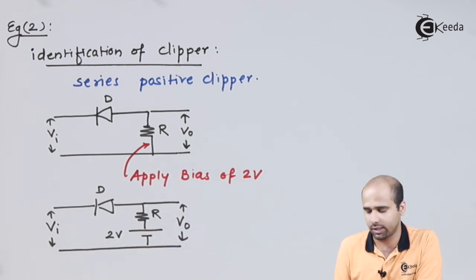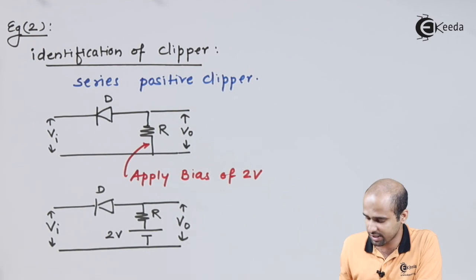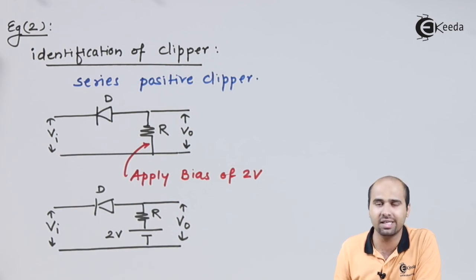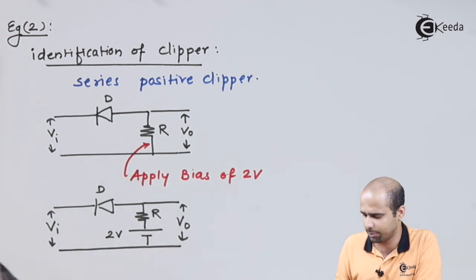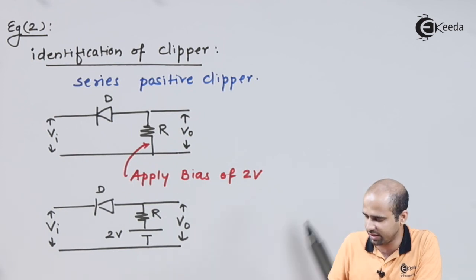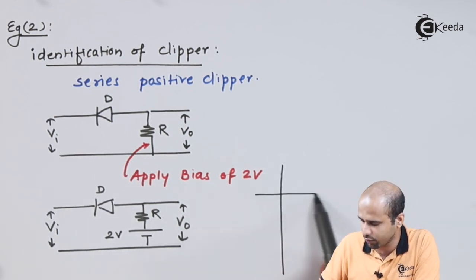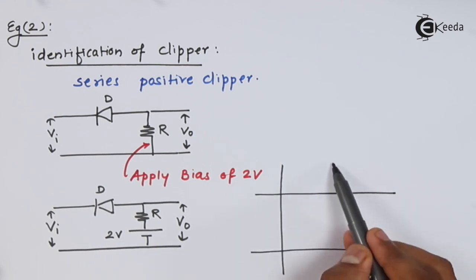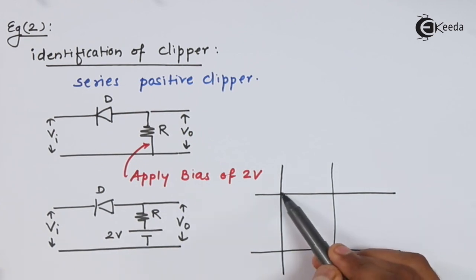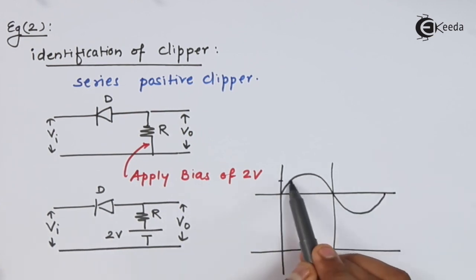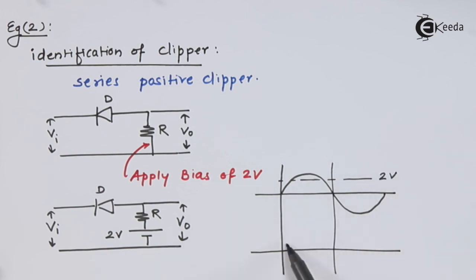This is the expected circuit. However, the solution of example 2 is not complete yet — we must verify the operation. We will prove that this circuit produces the required output waveform. Directly redrawing the waveform and verifying the positive half cycle, we confirm that above 2 volts the output is clipped at 2 volts, matching the expected waveform exactly.